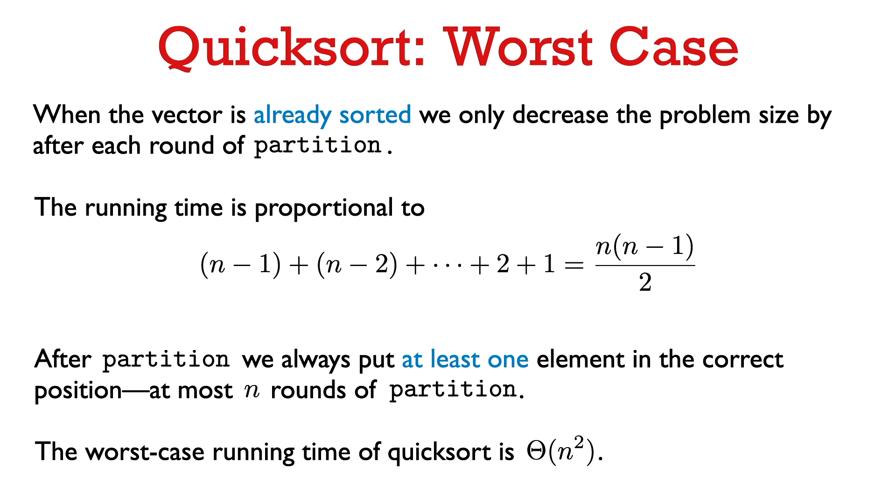For the upper bound: the partition algorithm always puts at least one element in its proper place with each call, and we don't need to worry about that element anymore. Since we start with n elements and partition always places at least one, we call partition at most n times. And each call takes O(n) time, since any interval we consider is at most the size of the entire vector, which is n.